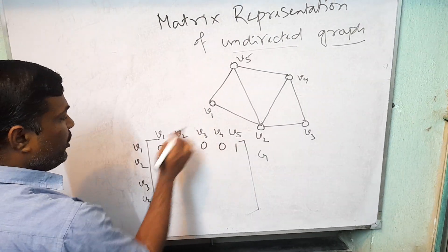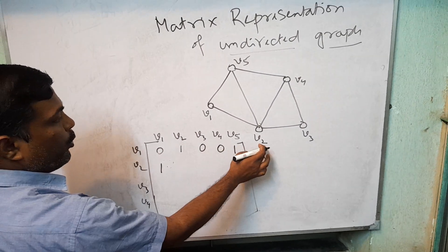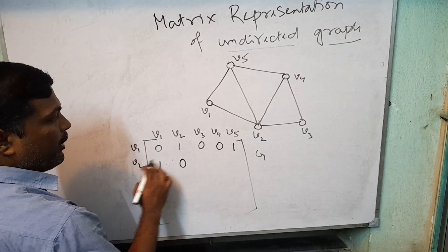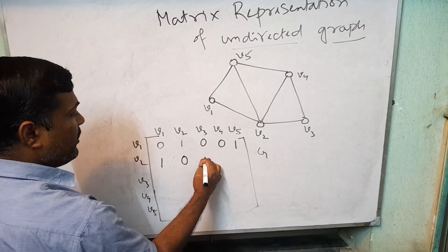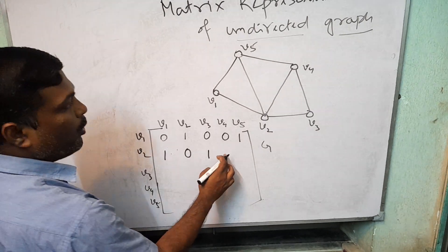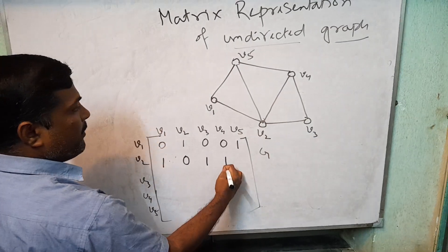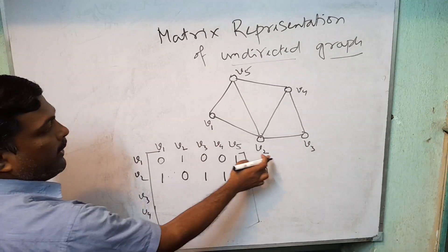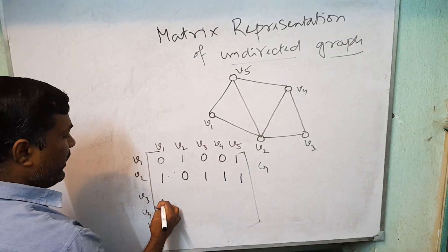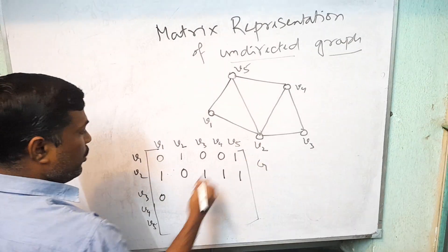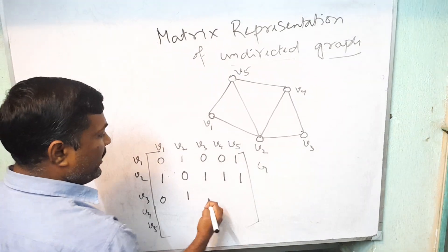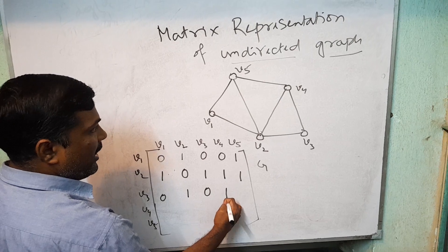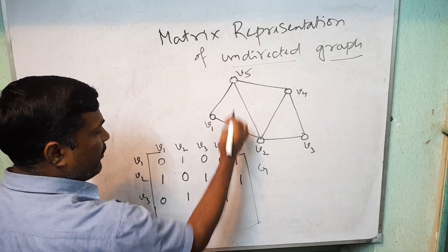V2 to V1: it is 1. V2 to V2: no edge, so 0. V2 to V3: we have one edge, so 1. V2 to V4: one edge. V2 to V5: 1. V3 to V1: no edge, 0. V3 to V2: it is 1. V3 to V3: no edge, 0. V3 to V4: it is 1. V3 to V5: no edge, 0.